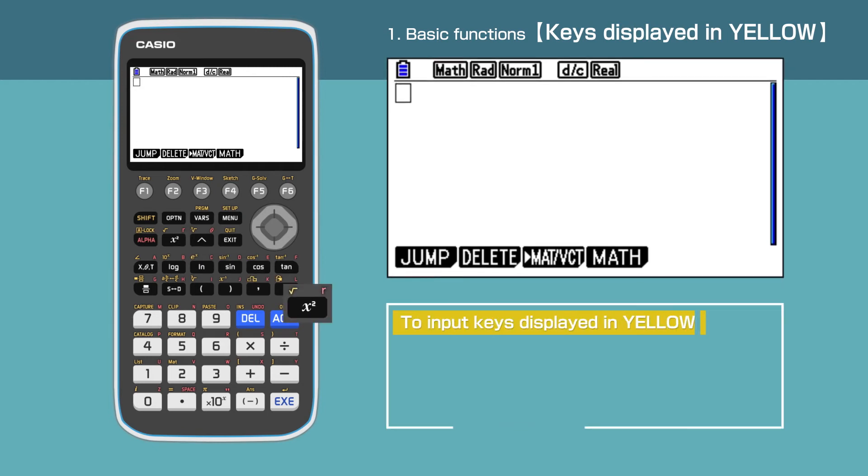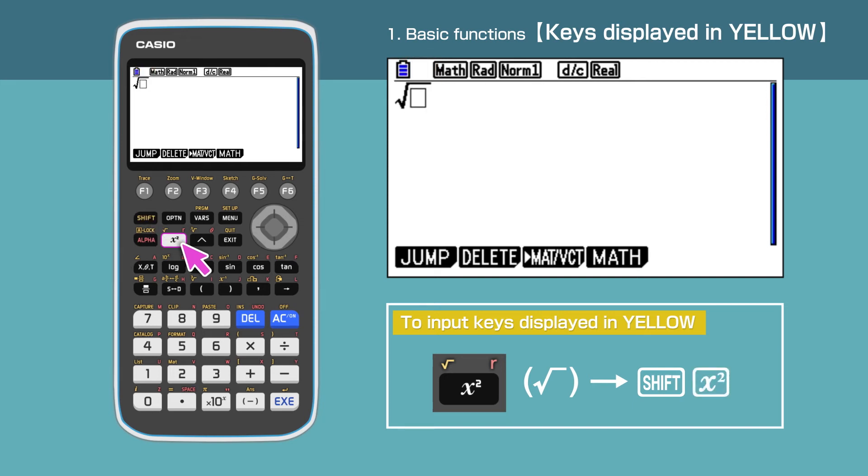For example, to take the square root, press Shift to select keys displayed in yellow, then press the x² button. When we press Shift, the symbol S in yellow appears at the top left corner. Then enter the x² key and the square root sign is displayed.